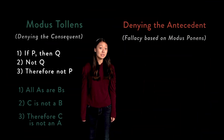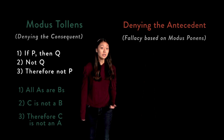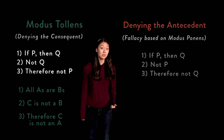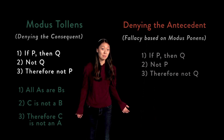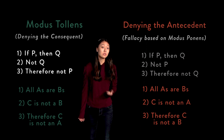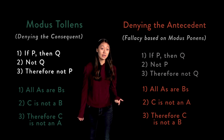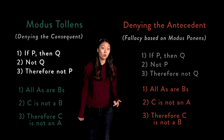An argument making the mistake of denying the antecedent has the form: 1. If P, then Q. 2. Not P. 3. Therefore, not Q. Or, for only categorical propositions: 1. All A's are B's. 2. C is not an A, or no C's are A's. 3. Therefore, C is not a B, or no C's are B's.